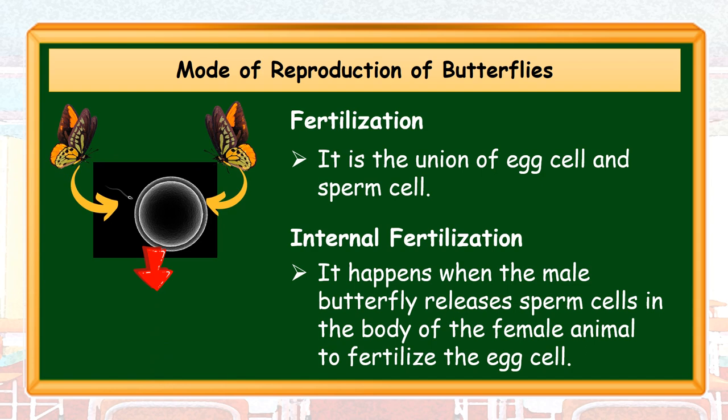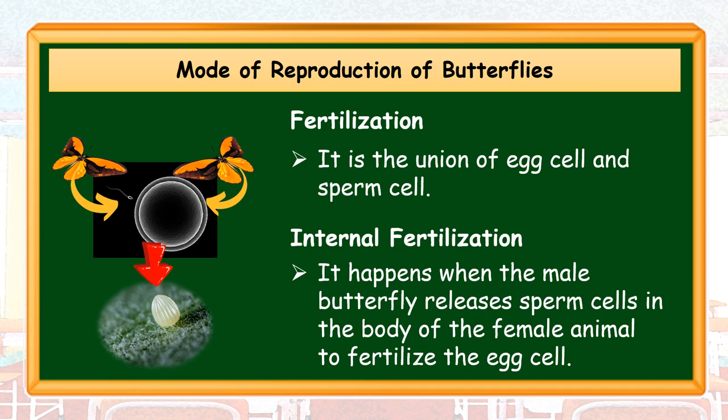When the egg becomes fertilized, the mother butterfly will lay its egg on a leaf. The embryo inside the egg will develop until it reaches its mature egg stage.